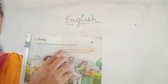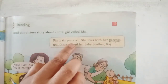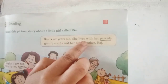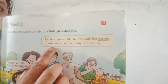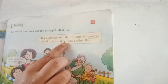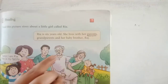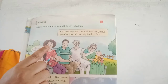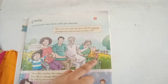Ria is six years old. Everyone put your finger like this. Ria lives with her parents, grandparents and her baby brother Raj. This is Ria's family. Ria lives with father, mother, grandfather, grandmother and brother Raj.